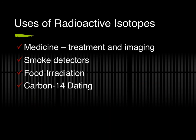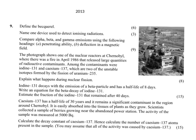Radioactive isotopes are used mainly in medicine — treating and imaging cancer — as well as in smoke detectors, irradiating food to kill germs, and carbon dating of fossils. Other materials with longer half-lives are used for dating things older than 100,000 years.